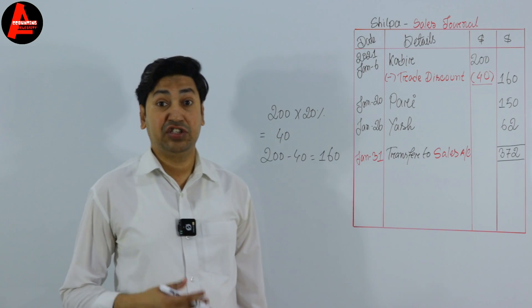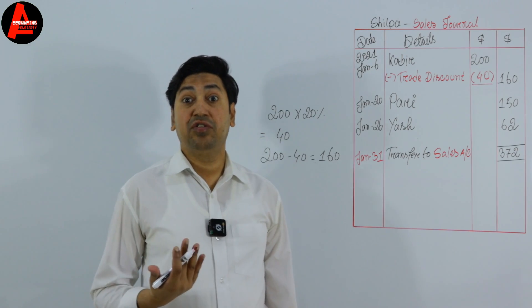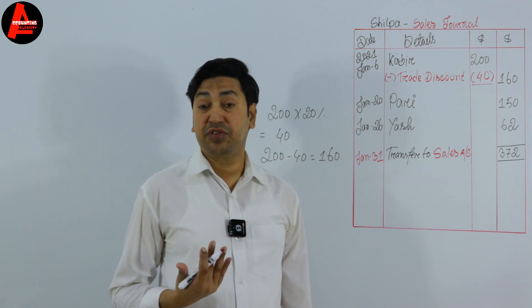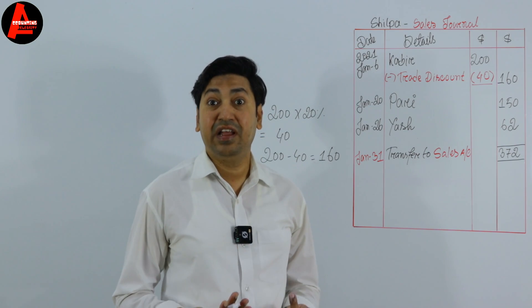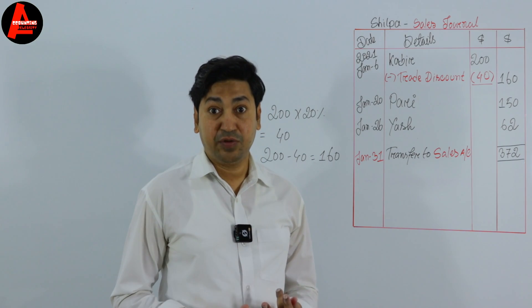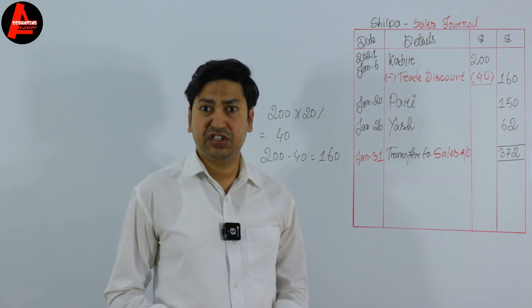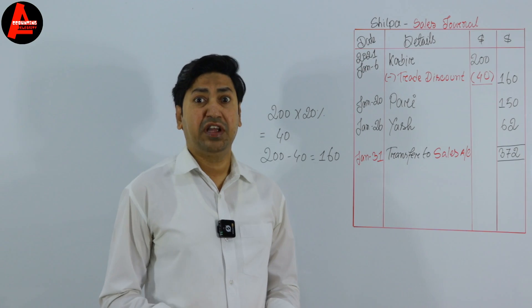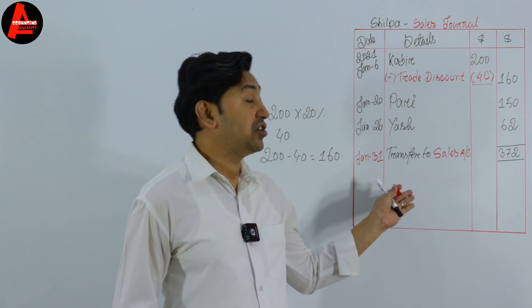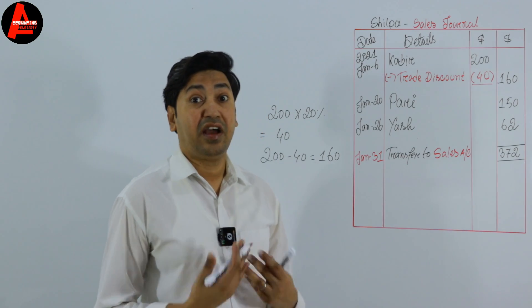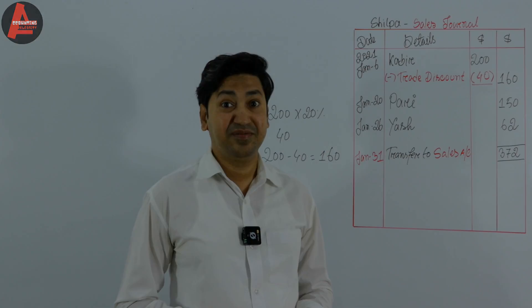That is how you prepare the sales journal. The next tutorial will also be important — I'll show you how to prepare the cashbook. We took only three transactions for the sales journal, and the remaining transactions will appear in the cashbook.